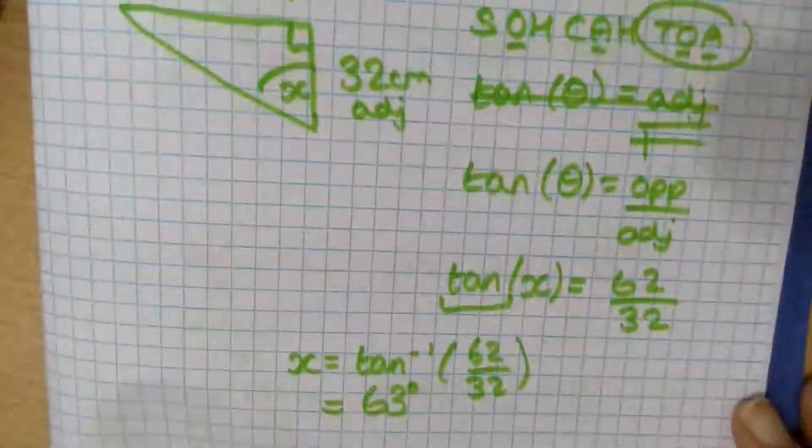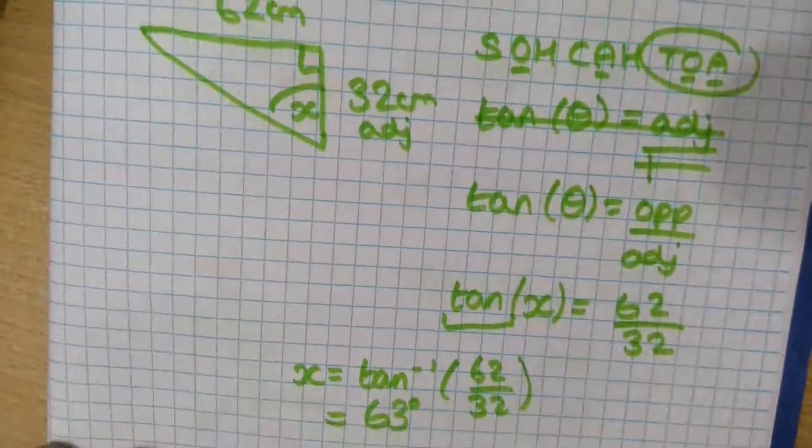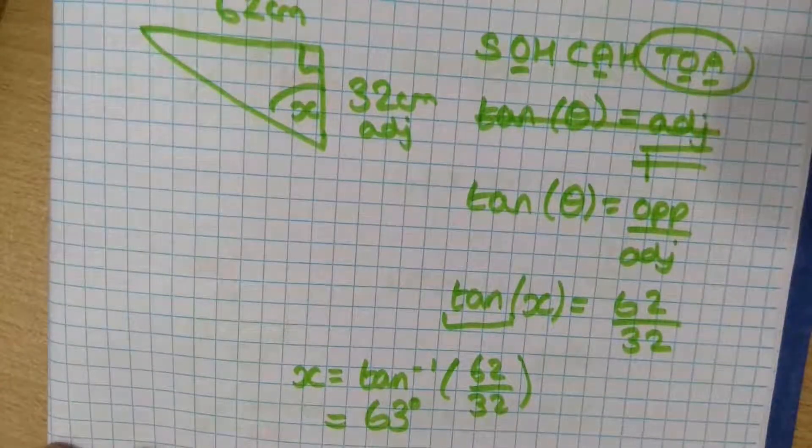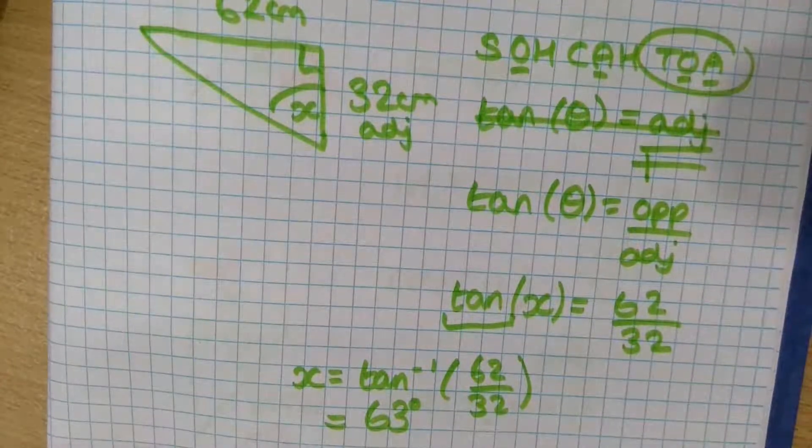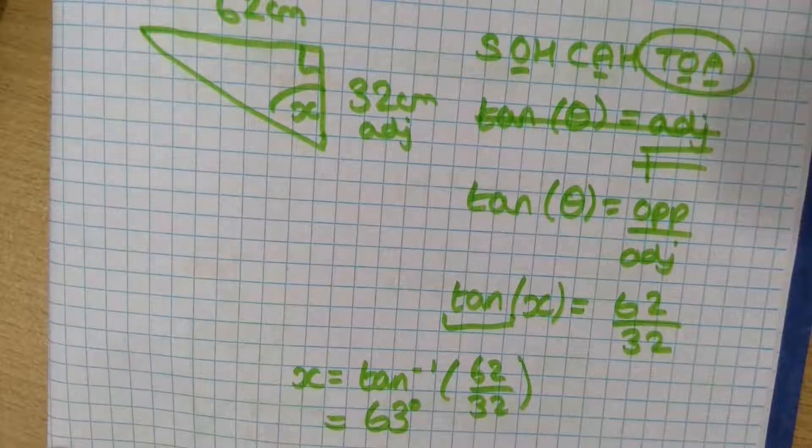So, method, same as before. We label the sides of our triangle. We choose a formula. We put the numbers into the formula. We rearrange and then we calculate.